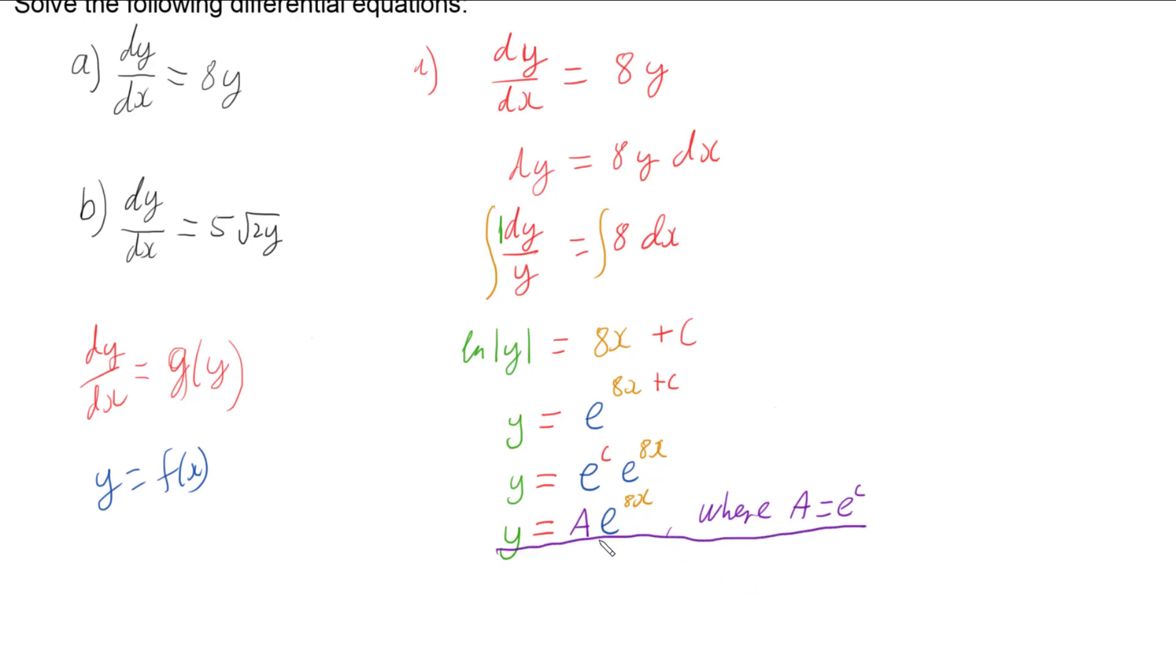And this is a general solution because I've got this constant A in it and I don't know what that number is. So in general, all functions dy/dx equals 8y are y equals A e to the 8x, and the A controls exactly what function we have.